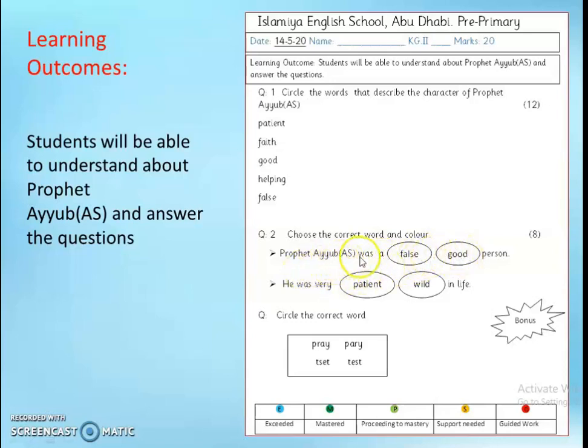Prophet Ayub Alayhi Salaam was a false, good person. Next, he was very patient, wild in life. So, please choose the correct word and color.